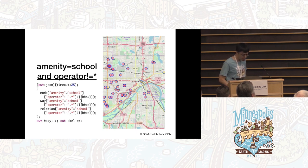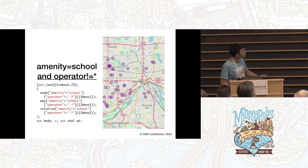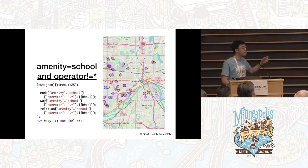Finally, the last example is where I said 'operator not equal to asterisk', and you can see that it translates into a regular expression in the Overpass QL. This is a little bit of a quirk of Overpass QL.